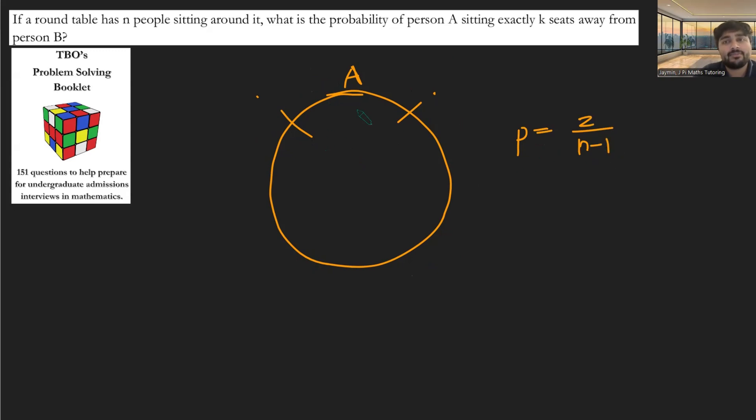Because there's two possible spaces for B to be sat in, in order for it to be k seats away from person A. But why is it important there that k is a small number? Well, if k is a large number, we get something similar. If k is like, let's say, n minus three.